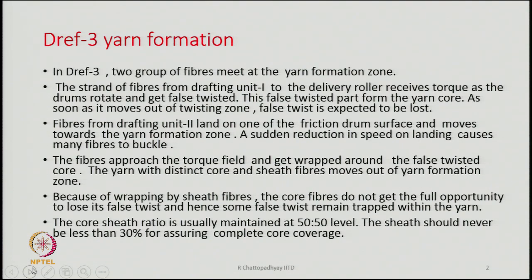The fibres coming from drafting unit 1 initially get twisted by the two drums. The internal suction in the drum causes the fibres to get stuck on the drum surface, and as the surface moves the bundle of fibres resting on the drum surface will be twisted. However, this twist is basically false twist. Therefore, the fibre bundle coming from drafting unit 1 is twisted along the entire length of the drum, but once they move out from the drum the twist is going to be lost, because it is a false twist.